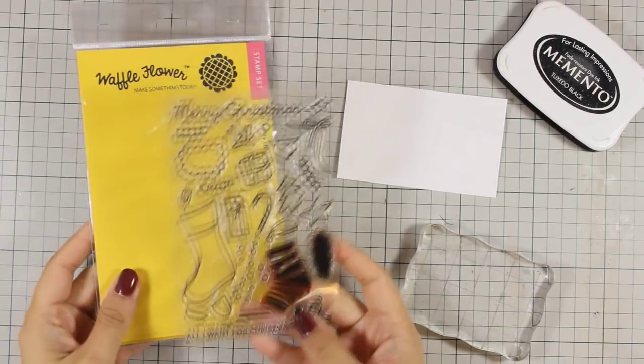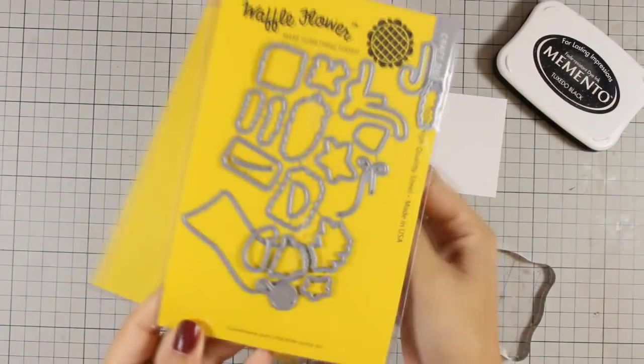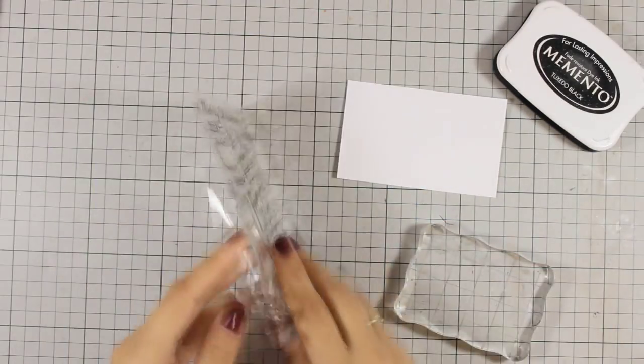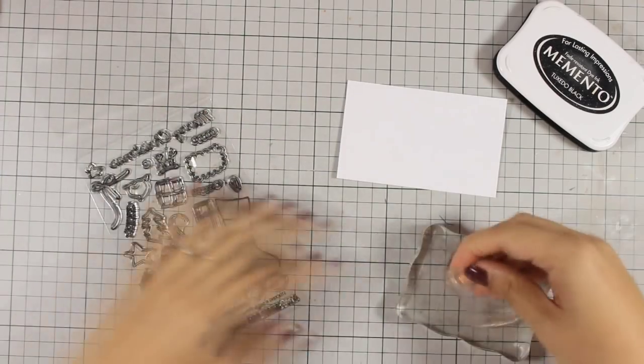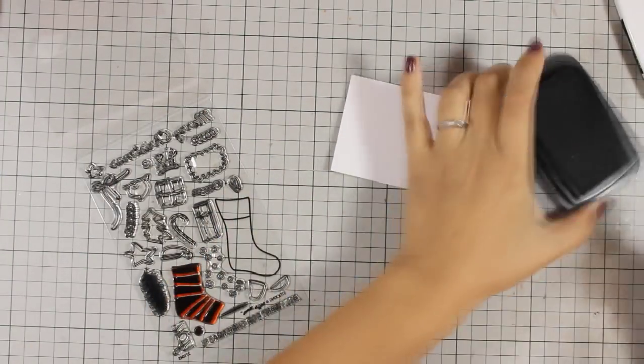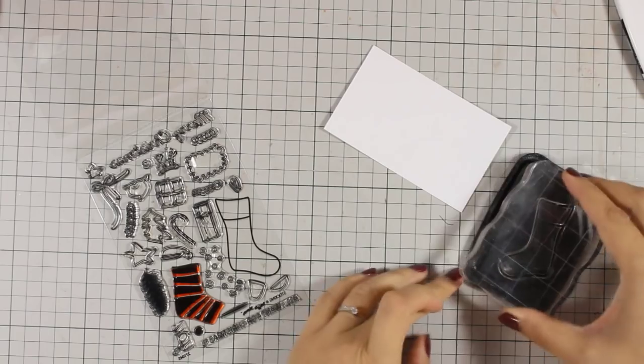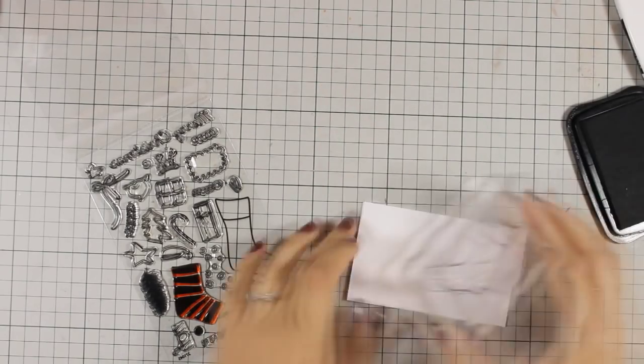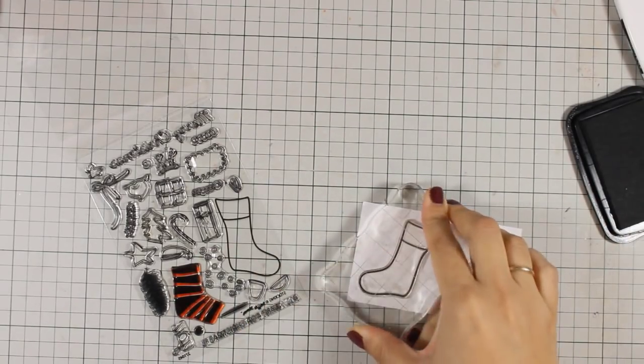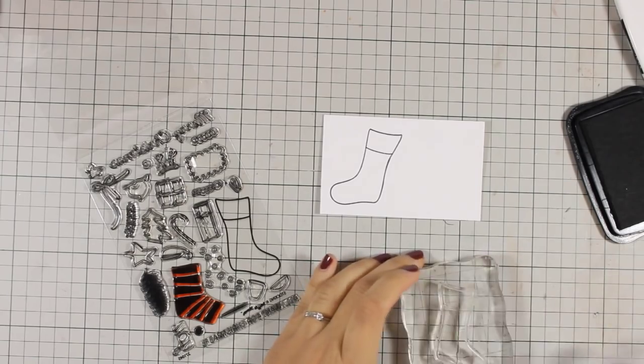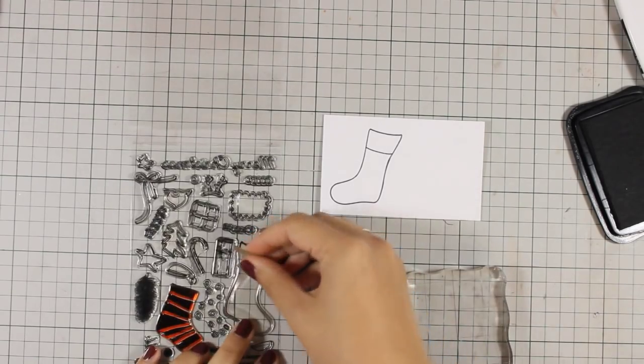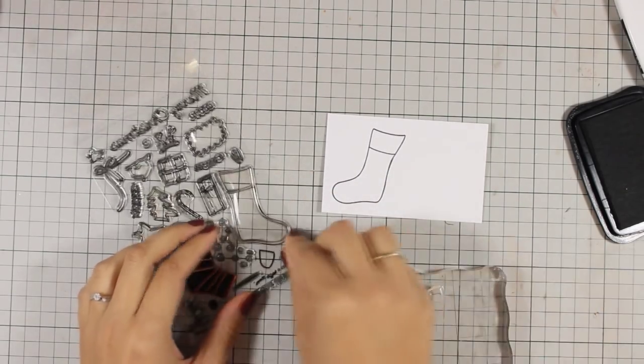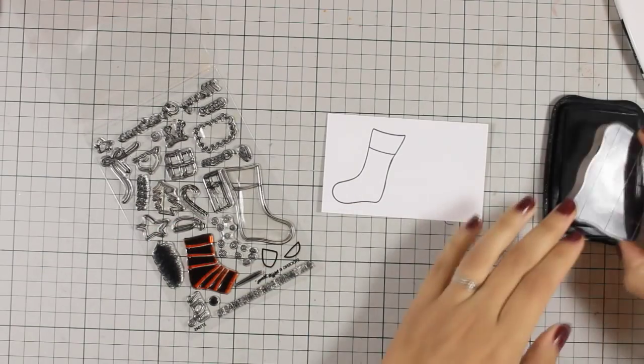For my card today I will be using this adorable stamp set by Waffle Flowers which is called Stoking and there is also matching dies available. First of all I am going to stamp with Memento Tuxedo black ink some of those images included in the set on white cardstock. Now I am using Memento ink because I will be using my Copic markers to color all the images later on.